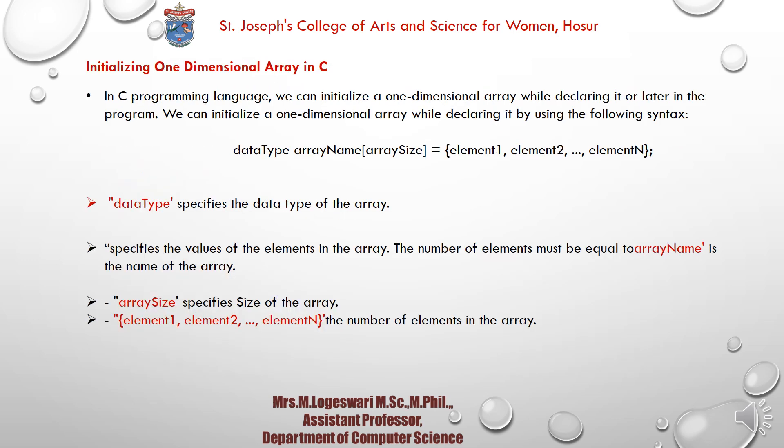Next, we will see initializing a one-dimensional array in C. If you want to initialize variables into an array, the syntax is: data type, array name, array size, and elements. The data type specifies the type — double, long, float, whatever it is. The array name specifies the name of the array. The array size specifies the number of elements, and elements are the values you assign.